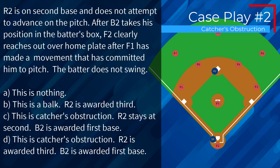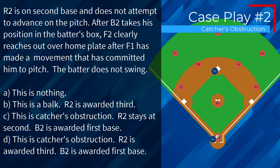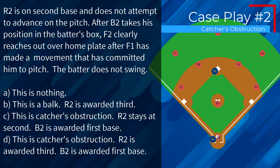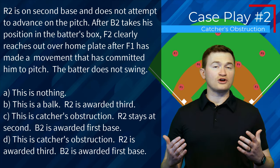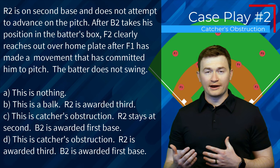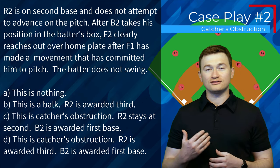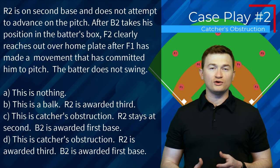Case play number two. R2 is on second base and does not attempt to advance on the pitch. After B2 takes his position in the batter's box, F2 clearly reaches out over home plate after F1 has made a movement that has committed him to pitch. The batter does not swing. Is this A, nothing; B, a balk, R2 awarded third; C, catcher's obstruction, R2 stays at second, B2 awarded first; or D, catcher's obstruction, R2 awarded third, B2 awarded first? The correct answer is C — this is catcher's obstruction because the catcher reached out over home plate while the pitch was being delivered. It doesn't matter whether the batter swings; we don't want to encourage batters to have to hit the catcher to get this enforced. B2 is awarded first base and R2 stays at second.